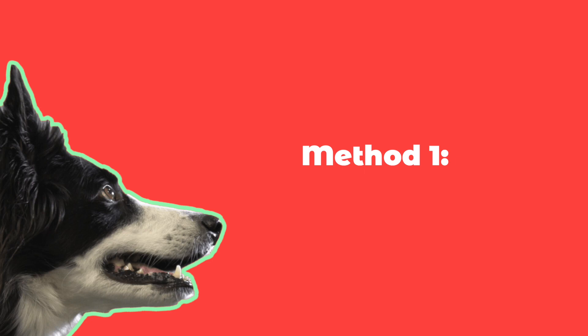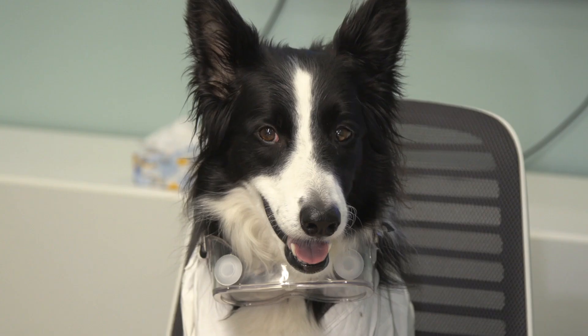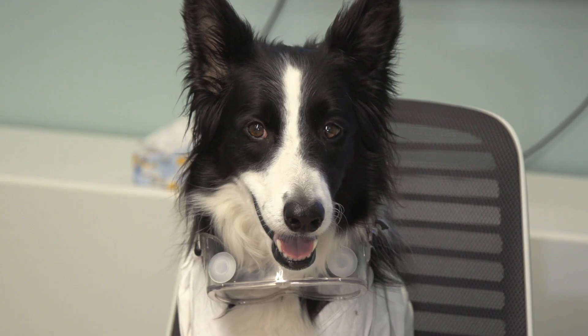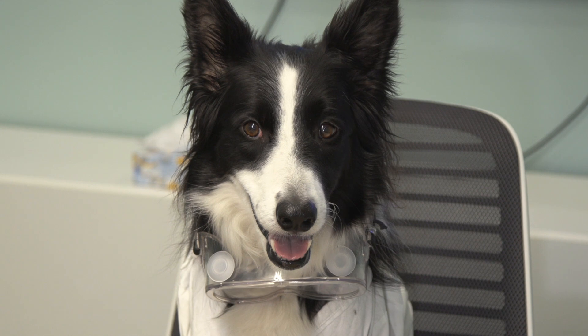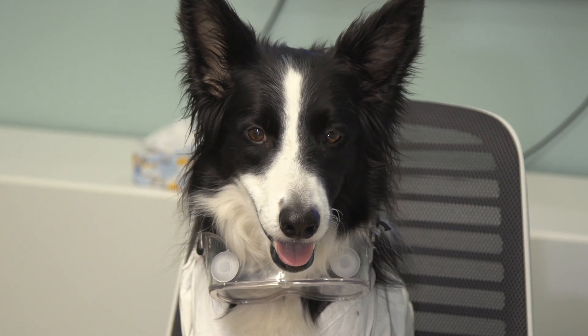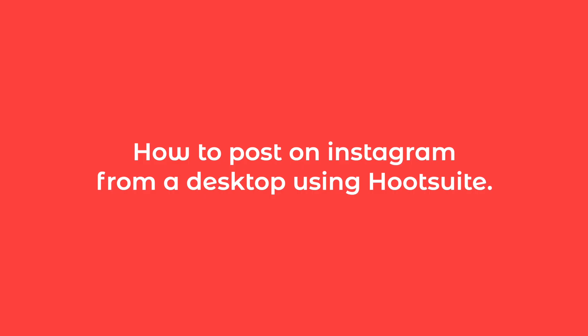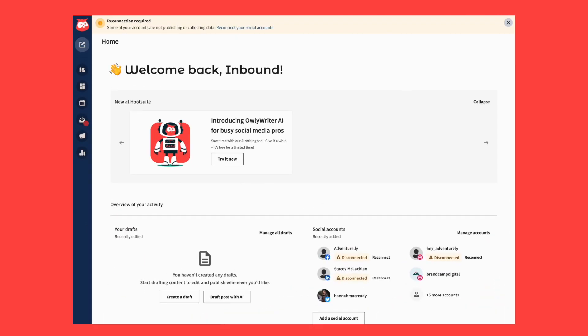Method one: Use Hootsuite. The first, best, easiest way to upload a story on Instagram from your desktop is through Hootsuite. Here's how to post on Instagram from a desktop using Hootsuite.